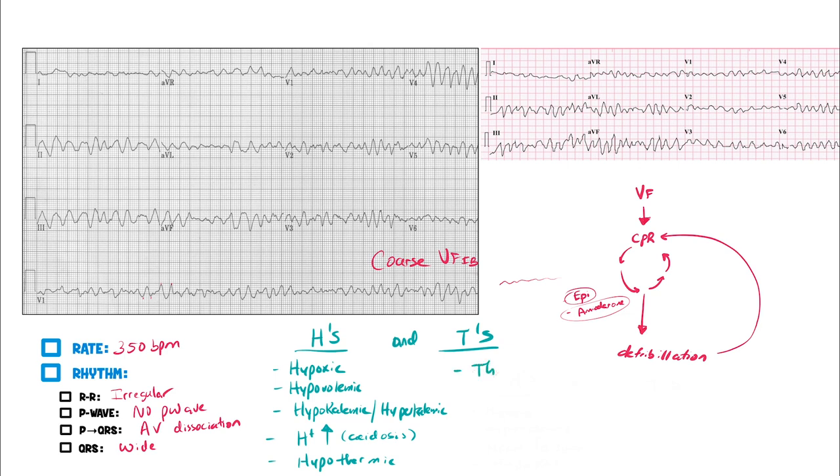What if it's T's? What if it's a thrombus? Obviously some type of thrombolytic. Give them some type of antiplatelet, anticoagulant, thrombolytic, or maybe some type of embolectomy. Maybe they have a tension pneumothorax. You can needle decompress.